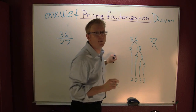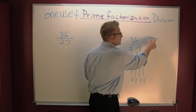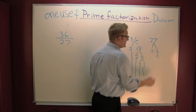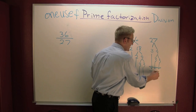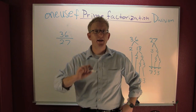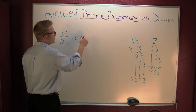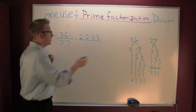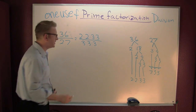Now I'm going to do the same thing with 27. There's no 2 in 27, so I go to 3. Two plus seven is nine, and 3 divides 9 evenly, so 3 divides 27. That gives us 3 times 9, which is 3 times 3 times 3. So 36 over 27 is written as 2 times 2 times 3 times 3, divided by 3 times 3 times 3.